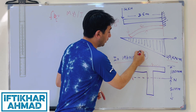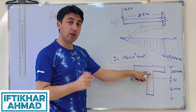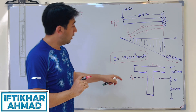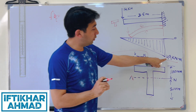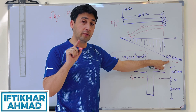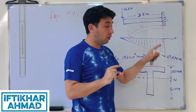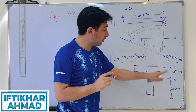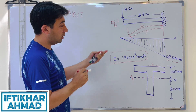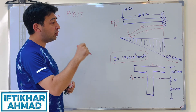The moment of inertia is given in the problem. If you want to know how to calculate the moment of inertia of a T-section, we have a separate video for that. We are using the maximum bending moment in the calculation. The y value for tension is 100 mm and for compression it is 200 mm.